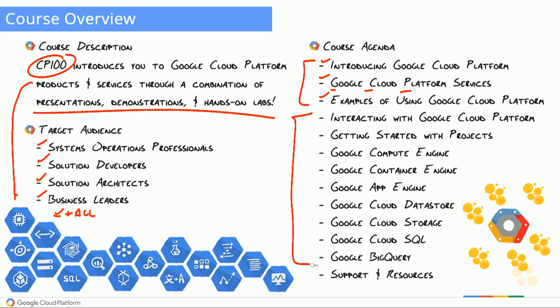From there, things start to get real — we're going to be getting our hands and feet wet in Google's cloud. Each one of these nuggets has a lab associated with it, and these aren't just self-contained labs for that nugget; they actually build on each other as we go, which is an awesome way of learning because we can see how these products interact with one another. We'll start with interacting with the Google Cloud Platform, getting up to speed on the tools we'll use to build and manage our solutions.